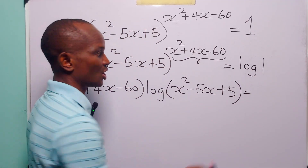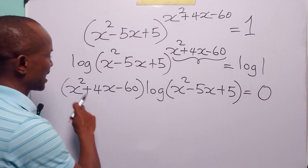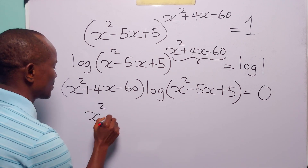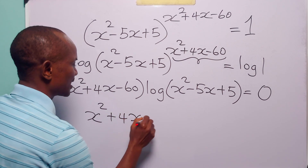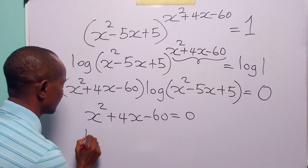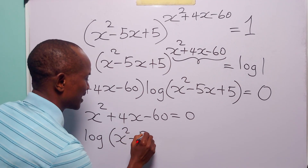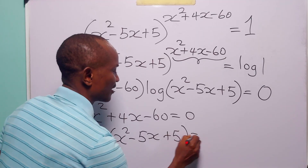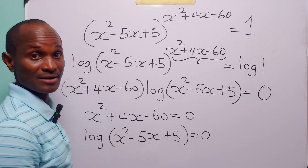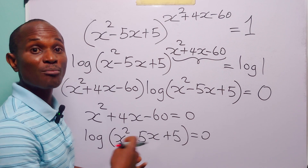This is equal to log 1, and you know that log 1 is equal to 0, so the right-hand side is 0. From here we conclude that either x² + 4x - 60 is equal to 0, or log(x² - 5x + 5) is equal to 0, because when we have the product of two items equal to 0, it means either one or both of them equal 0.